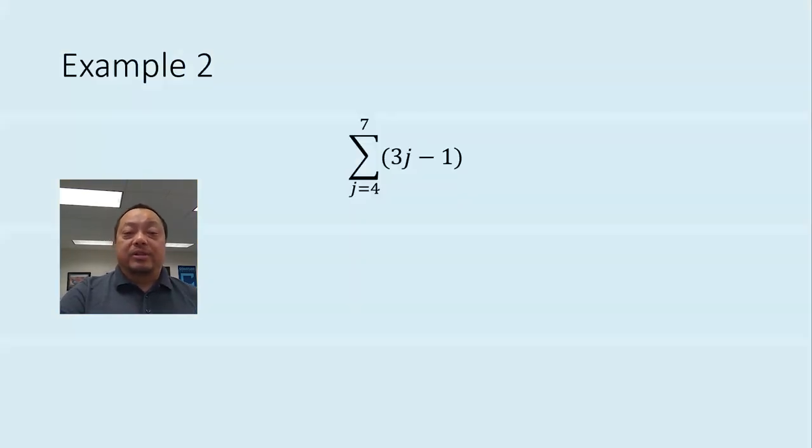Next example, sum from j equals 4 to 7 of 3j minus 1. Let's interpret this notation. Sigma is a sum, sum of what? Of the 3j minus 1. What are the j's that go into the calculation 3j minus 1? For that, read these two parts. It says to start from j equals 4 and end at j equals 7, going through all the numbers in between.